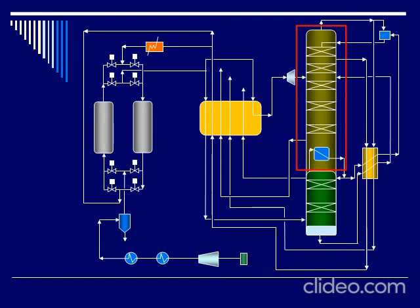After that column, the rest of the distillation will take place. Again, we will end up with nitrogen at the top of the column.